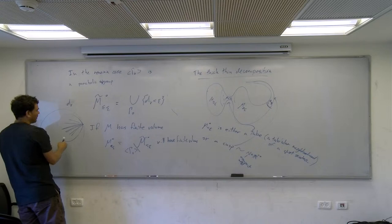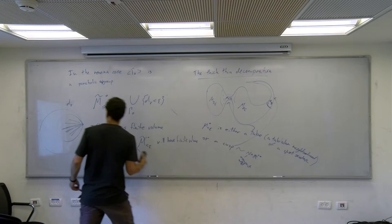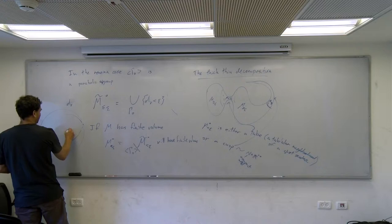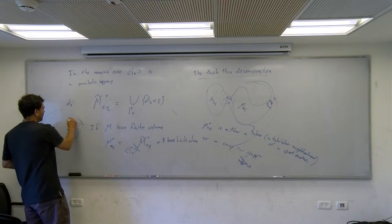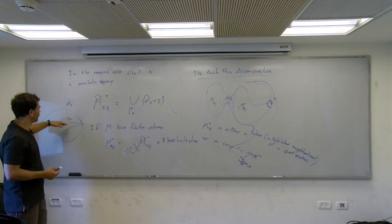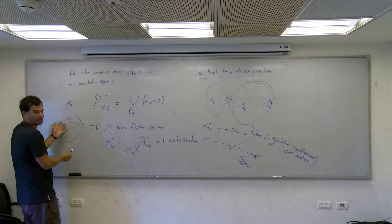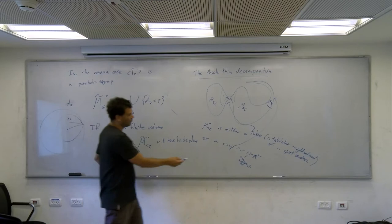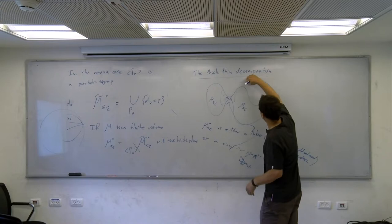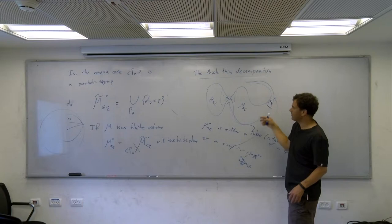If gamma is parabolic, when you go to the fixed point, the distance between this point and gamma of this point — so the distance between the two geodesics goes to zero. That's exactly the displacement function going monotonically to zero along the ray. So this entire ray will be inside the sub-level set, and all these directions correspond to the arm of the cusp.